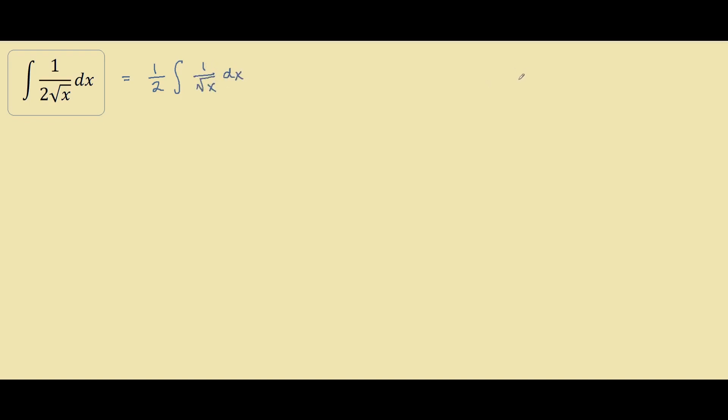From our index laws, we know that square root of x is the same thing as x to the power of half. We know that 1 over x is the same thing as x to negative 1. So if you combine both these rules, you can see that 1 over square root of x is the same thing as x to the power of negative half.